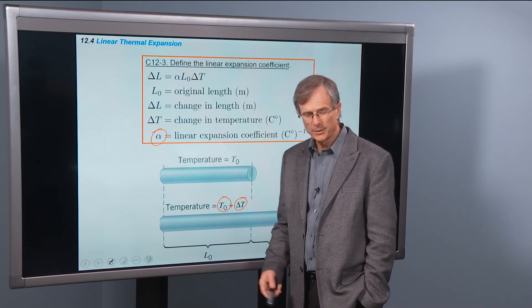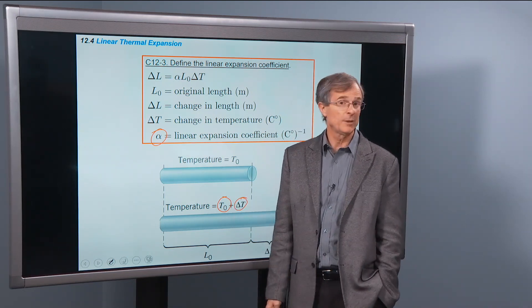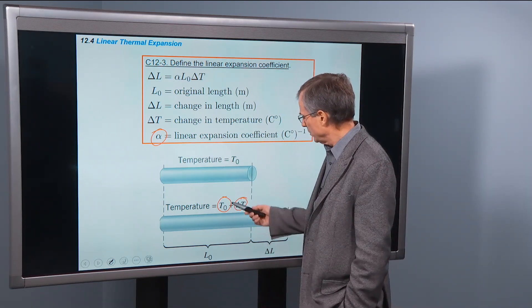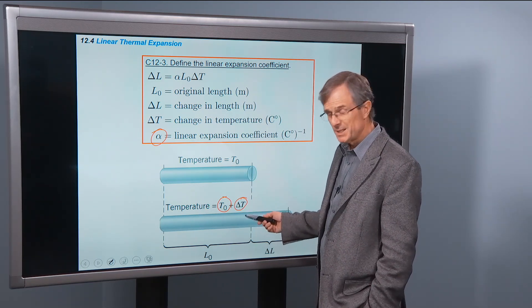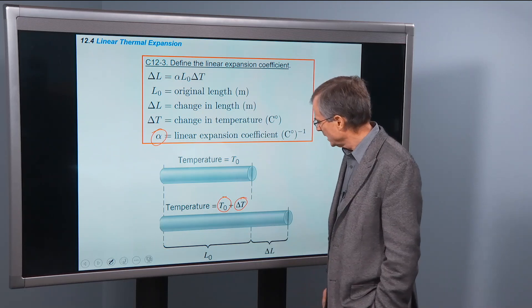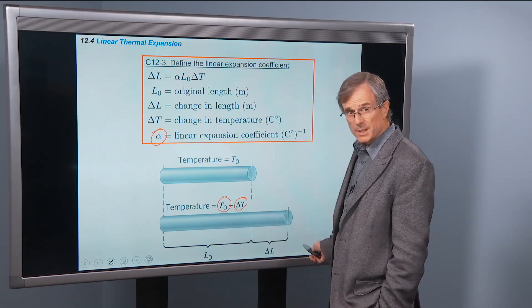So it starts at 10 degrees Fahrenheit and goes up to 20 degrees Fahrenheit, say, where T0 is 10 and delta T, the change in the temperature, is 10, and 10 plus 10 is 20. How much does it expand?